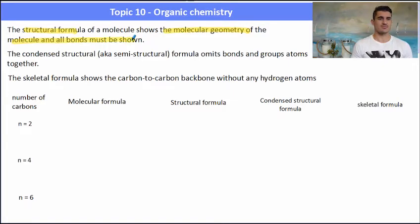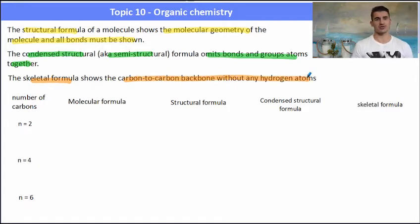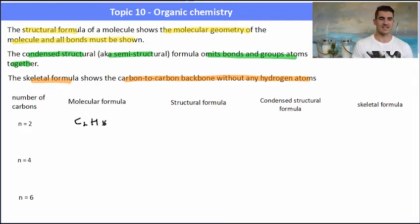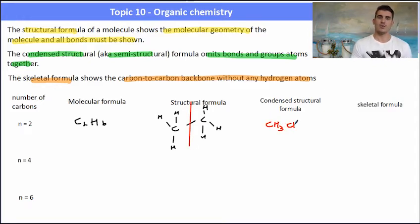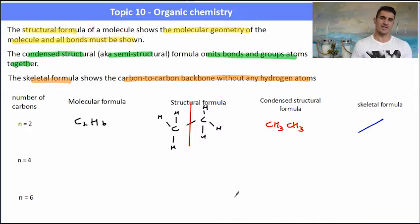Now let's look at drawing some of these molecules. The structural formula shows the molecular geometry — you must show all of the bonds when asked to draw a structural formula. A condensed (or semi-structural) formula omits the bonds and groups the atoms together, and the skeletal structure just shows the carbon-to-carbon backbone without any hydrogen atoms. For ethane (C₂H₆), think of drawing the carbons in a zigzag with hydrogens continuing that zigzag at each end, then placed above and below. The condensed formula would be CH₃CH₃, and the skeletal formula is just a line with a carbon at each end.